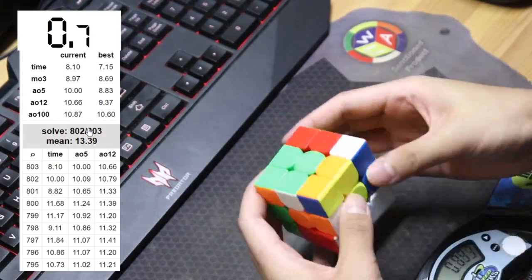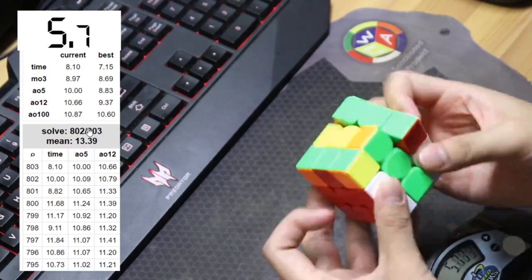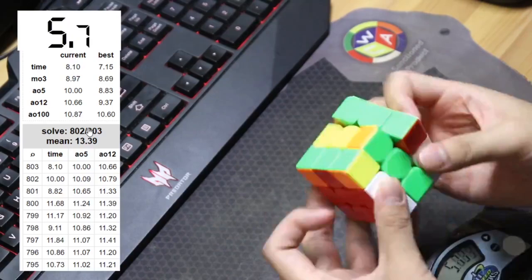So yeah, that's a bit of a review of the Meilong M and why I think budget cubes are so good these days. This is really cool with the other 3x3s, but hopefully this trend with budget cubes being super good can extend to other puzzles. But yeah, that's it for this video. Thank you for watching, and see you guys in the next one.